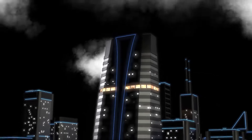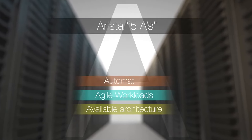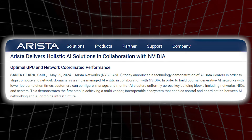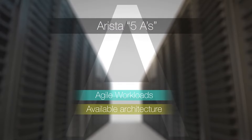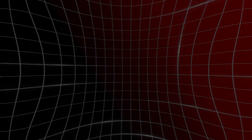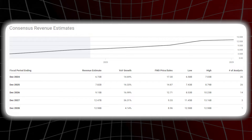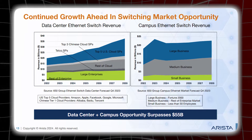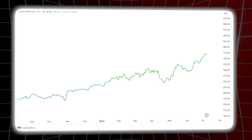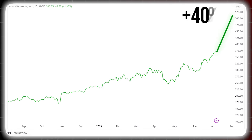Arista's close partnership with Broadcom, a leader in networking AI chip design, strengthens its position, allowing integration of powerful hardware with software solutions for cloud providers building AI infrastructure. Arista is specifically targeting the limitations of Nvidia's InfiniBand solution by leveraging the flexibility of its Ethernet architecture to address network silos and facilitate faster deployment times. Arista anticipates AI-related revenue to reach $750 million by 2025. We are bullish, and our 12-month target price is $520, giving an upside of 40 percent from current levels.